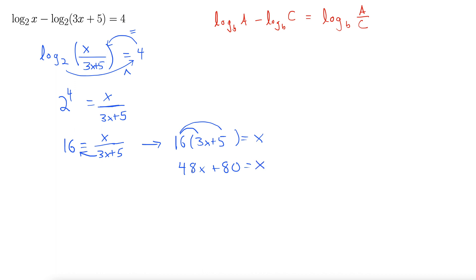Now let's get all the x's on one side, everything else on the other. So 48x minus x, I subtracted an x from both sides, equals negative 80. I got that from subtracting 80 from both sides.